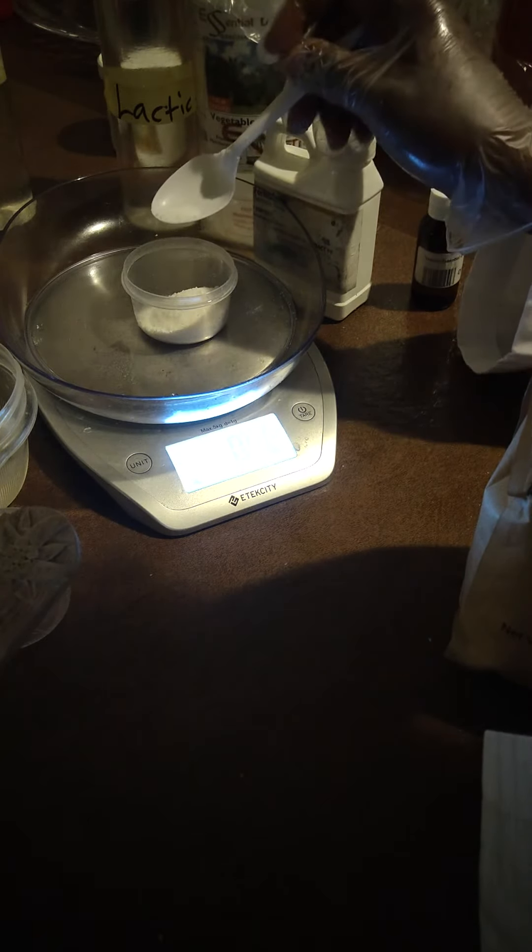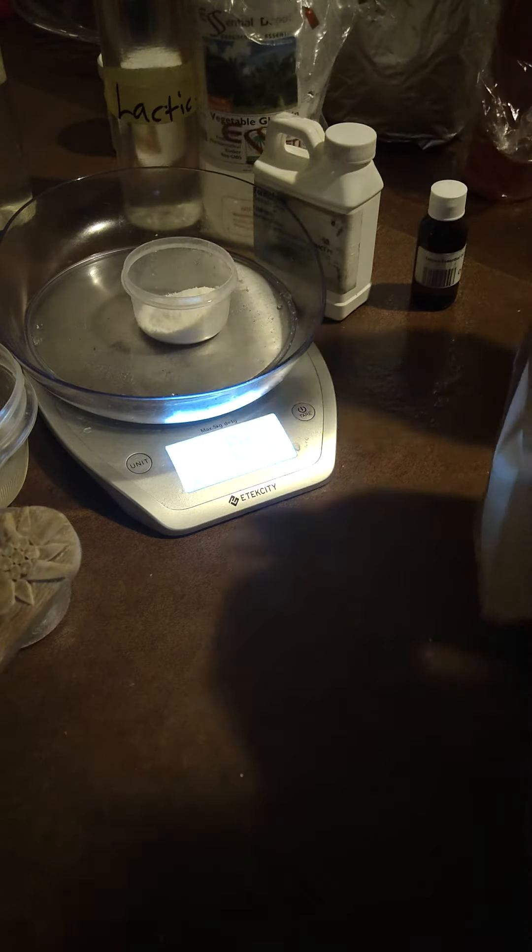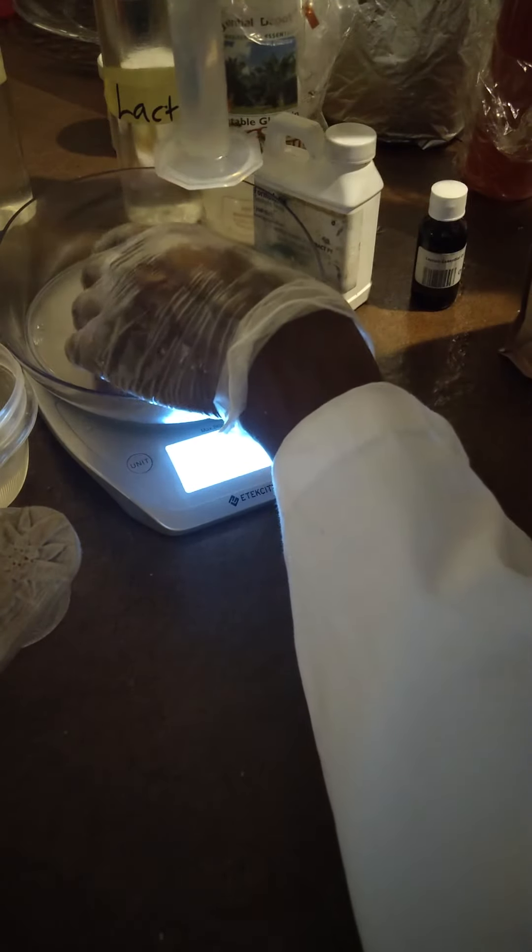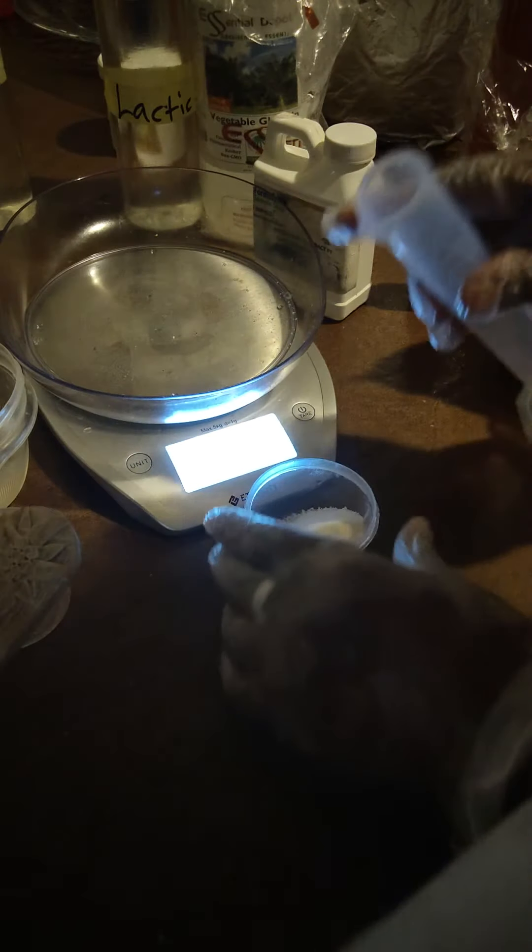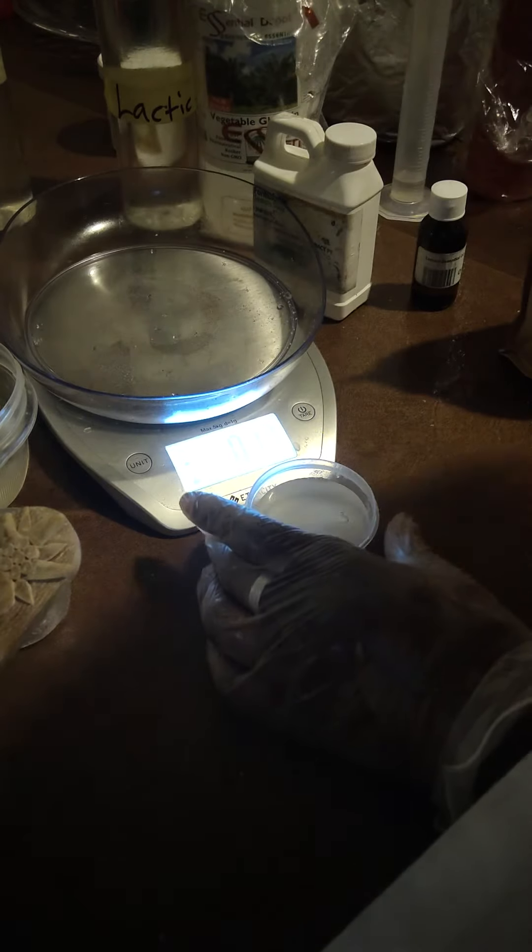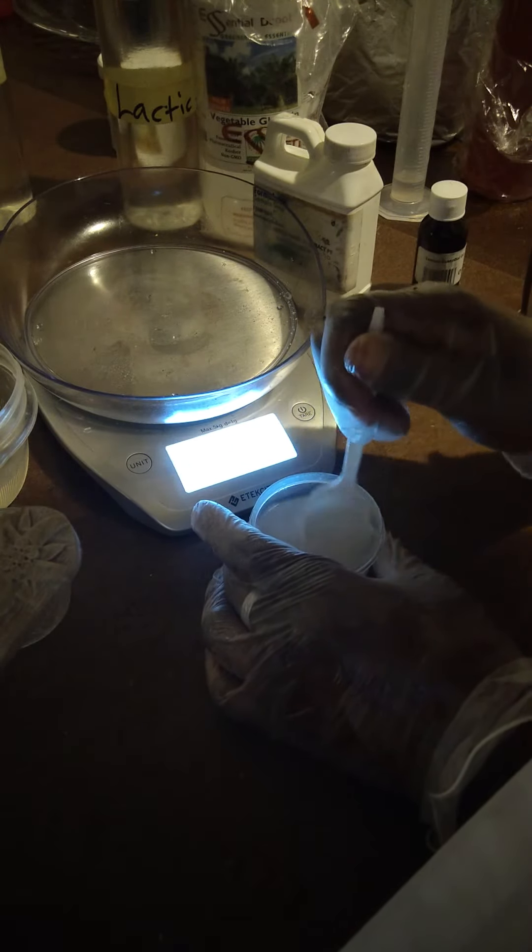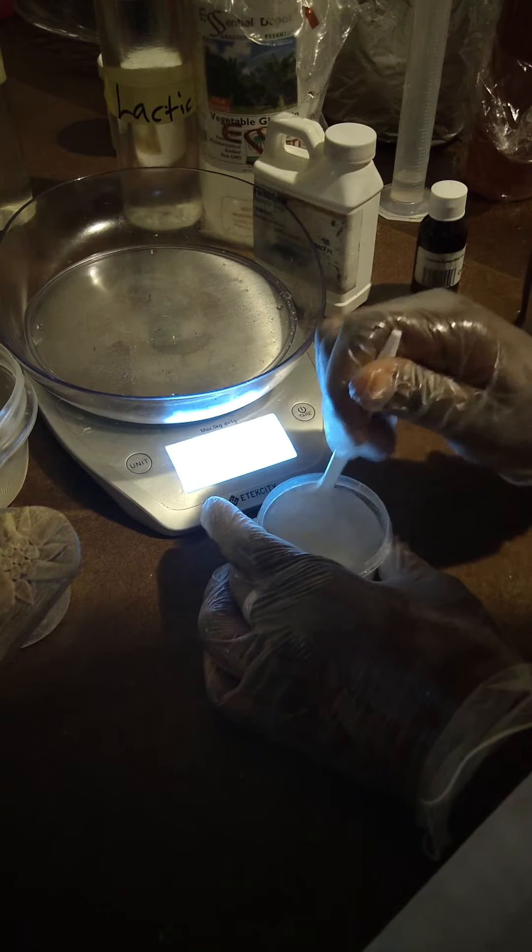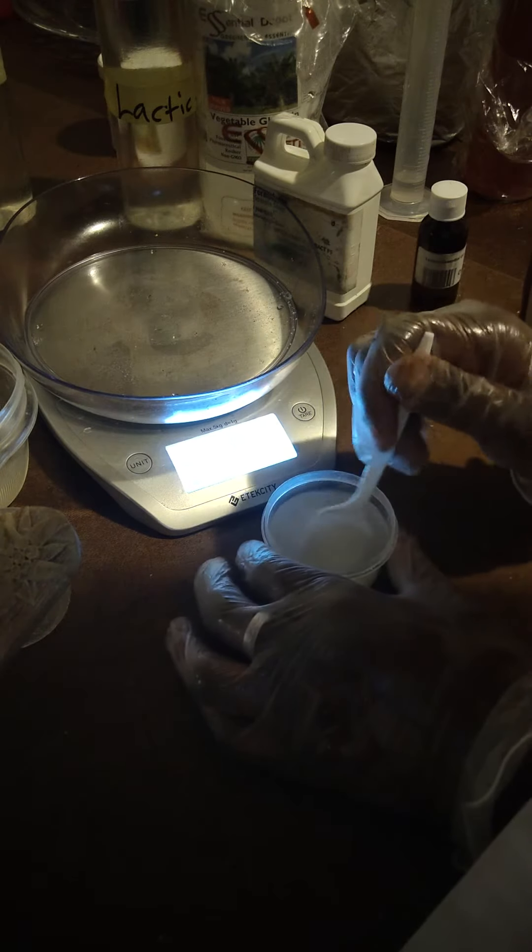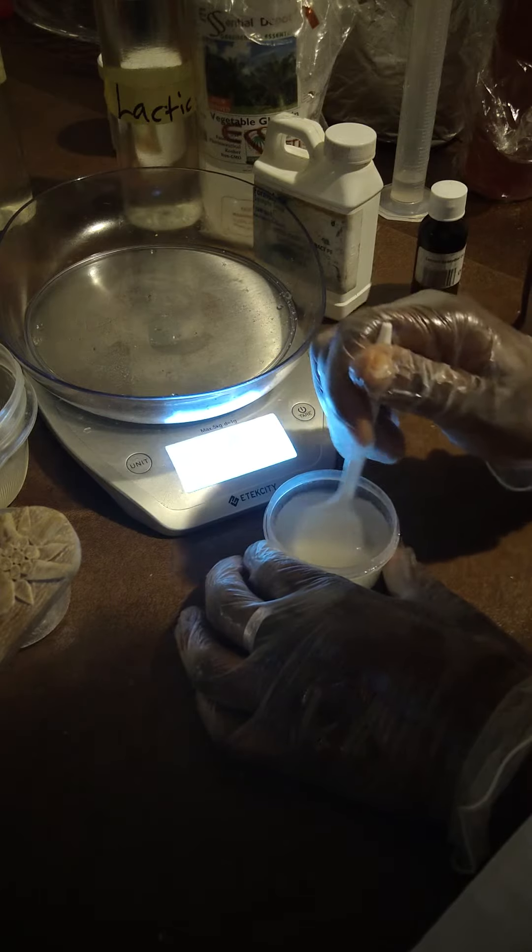I'm going to be dissolving the malic acid because it cannot be used in the peeling oil as is. I'm adding distilled water to dissolve my malic acid. The final solution will be more than six ounces because I used solvents to dissolve some of the powders. The lactic acid and glycolic acid were already dissolved.